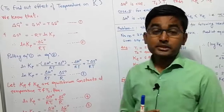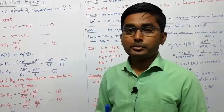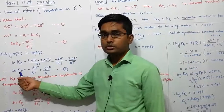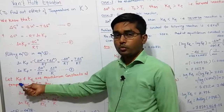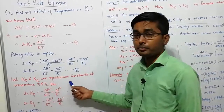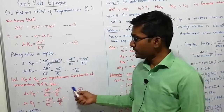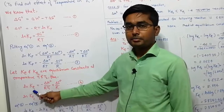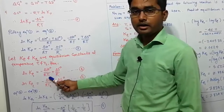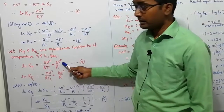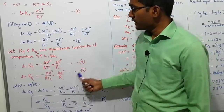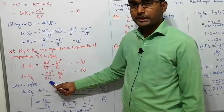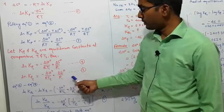As temperature changes, the equilibrium constant also changes. Let us consider the equilibrium constant at two different temperatures. Let Kp1 and Kp2 be the equilibrium constants at temperatures T1 and T2 respectively. Then: ln Kp1 = −ΔH⁰/RT1 + ΔS⁰/R (equation 4), and ln Kp2 = −ΔH⁰/RT2 + ΔS⁰/R (equation 5).